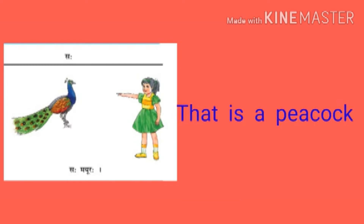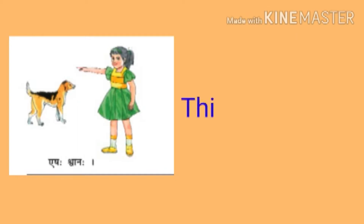The second Pulling Ekavachnam example is Saha Mayuraha — this is a peacock. The third one is Ishaha Shwanaha — this is a dog. The next one is Saha Simhaha — that is a lion.